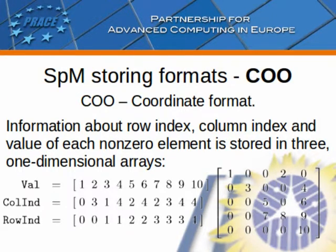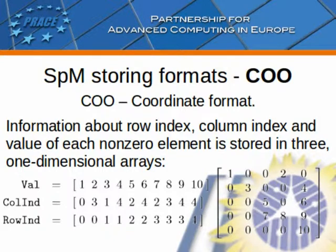The most obvious sparse matrix storing format is COO, the coordinate format. In COO, information about the row index, column index, and value of each non-zero element is stored in three one-dimensional arrays. Unfortunately, in most cases, such a storing scheme leads to storage of identical sequences for the row index, which causes memory overhead.